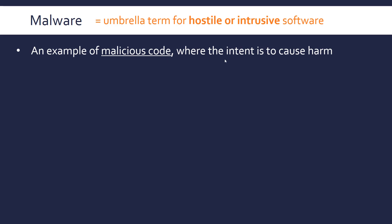The harm caused by malicious code could be quite a low level or it could be very severe. An example of malicious code which isn't malware — to show that malicious code is the overarching term — would be an SQL injection attack, where you're writing an SQL statement to try and steal some data or damage a database. That is not malware itself but it is malicious code that is trying to cause harm.